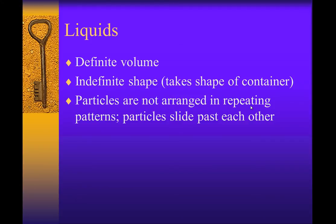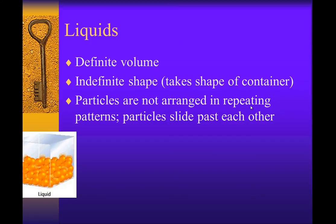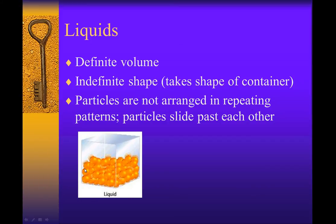The particles are not in nice, neat repeating patterns. This allows them to slide past each other, which gives it that sloshing kind of view. Here's an image—you can see they're not nice and neat. They can kind of move back and forth, which is what allows liquid to flow.